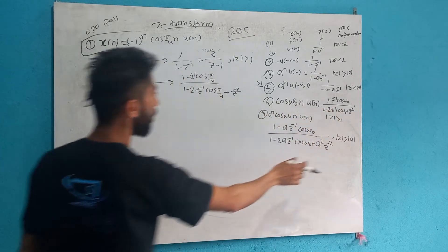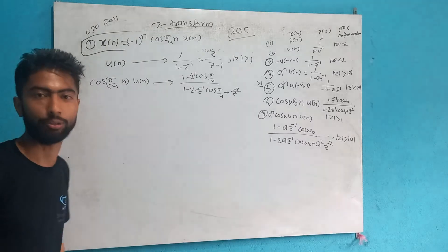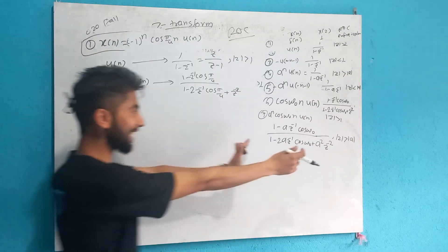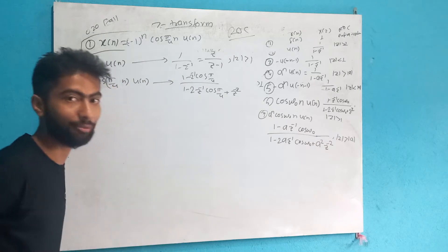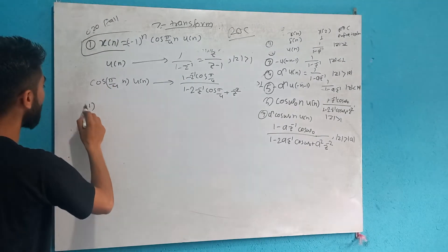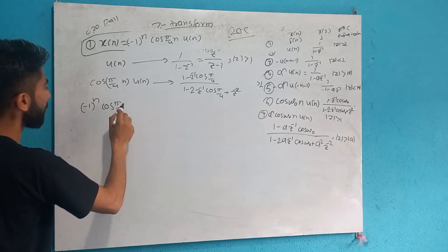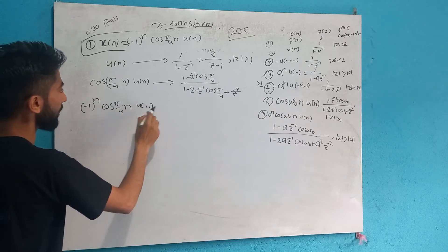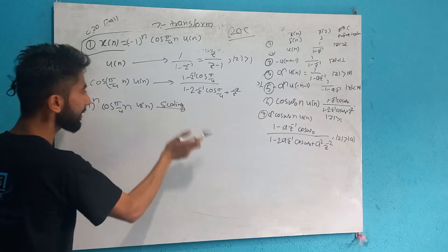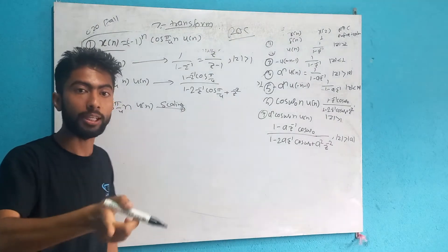Now let's check — we will use this property: take minus 1 to the power, and cos pi by 4. We will apply the scaling property here.